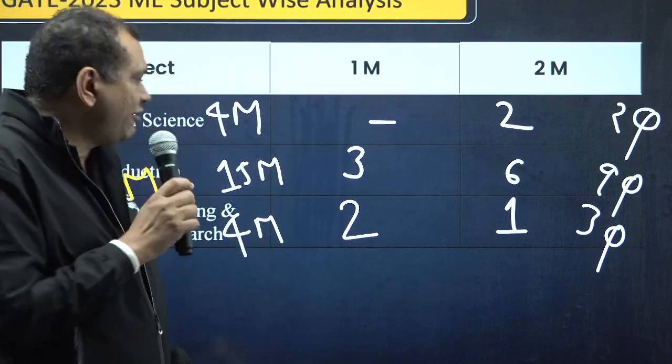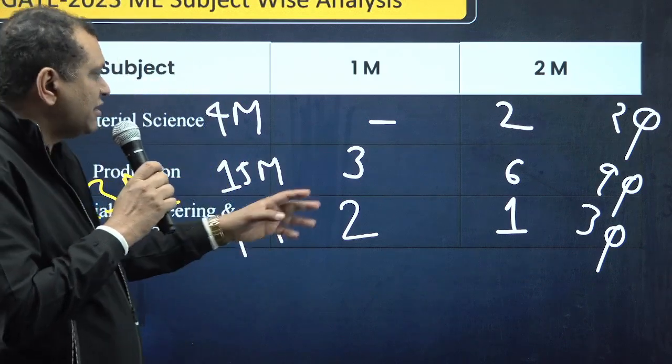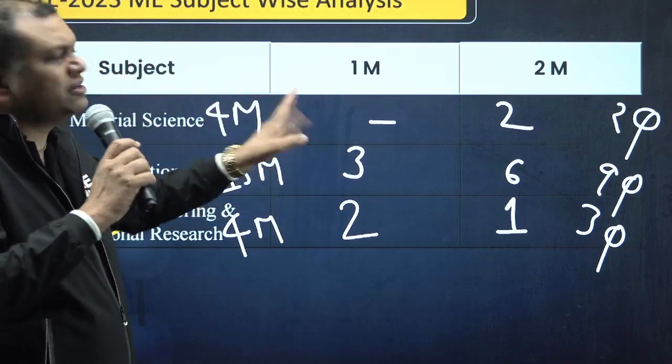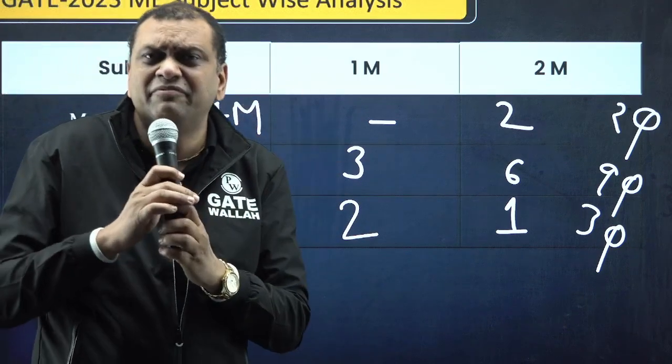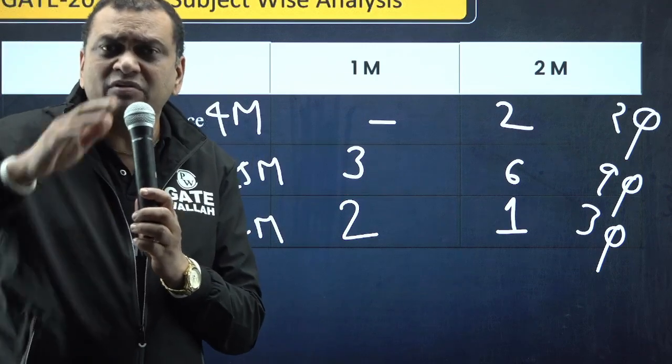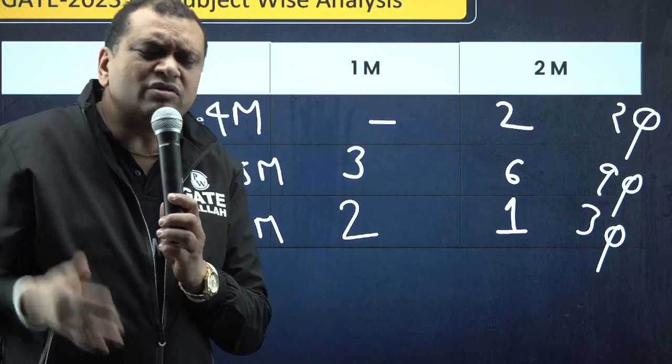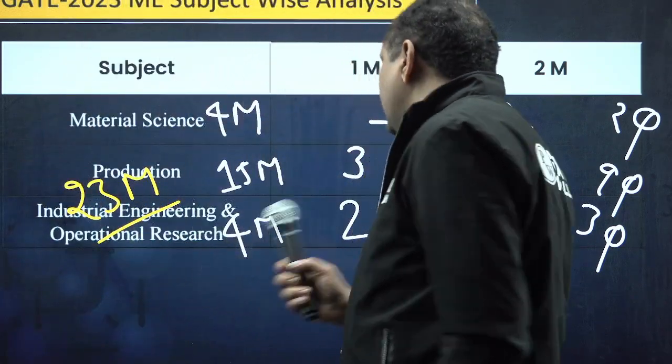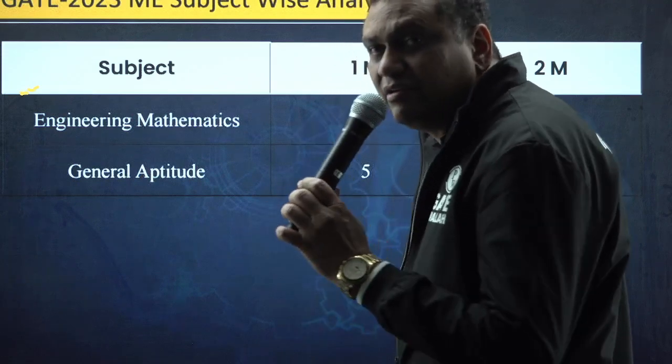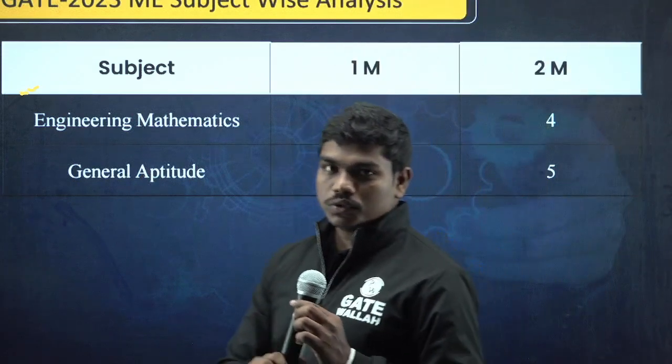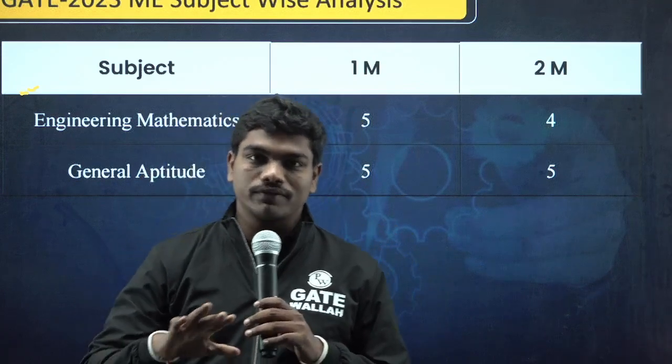As far as industrial engineering is concerned, there were only 3 questions: 2 questions of one mark and 1 question of two marks. They were very easy questions like break-even analysis, inventory control, linear programming. Industrial engineering was very easy. Now I request our faculty for mathematics and aptitude.